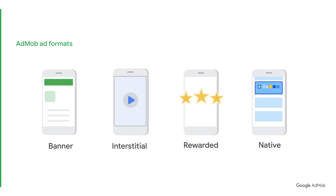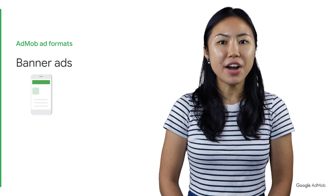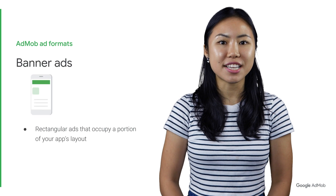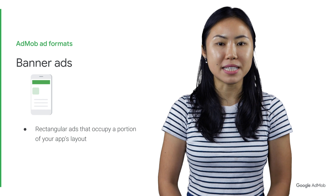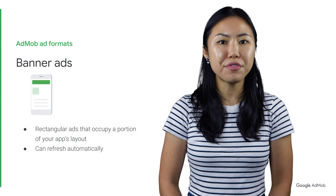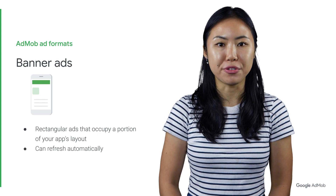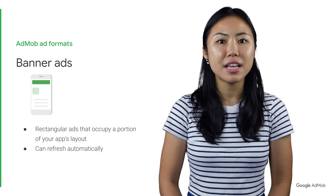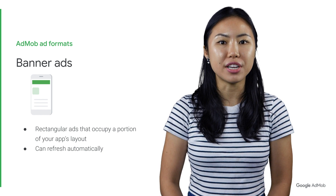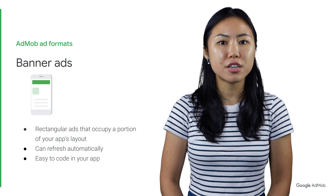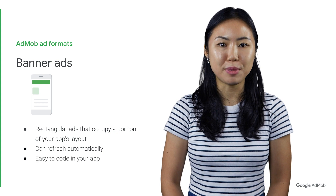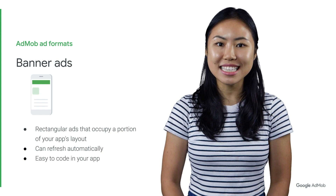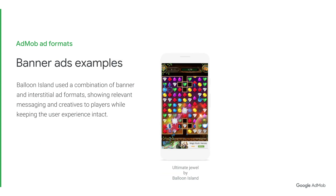Let's learn more about each of these formats. Banner ad units are rectangular ads that occupy a portion of an app's layout. Banners can refresh automatically after a set period of time. If users stay on the same screen in your app, they will see a new ad at regular intervals. Banners are also the simplest ad format to implement. On the left device, you can see how Balloon Island used banner ads in their Ultimate Jewel app.